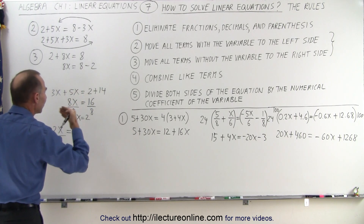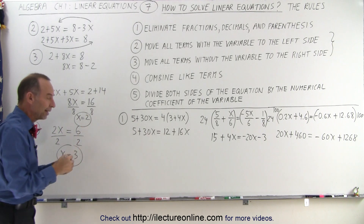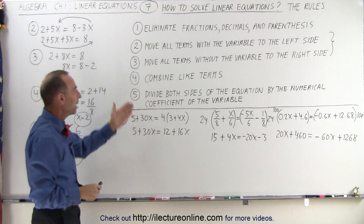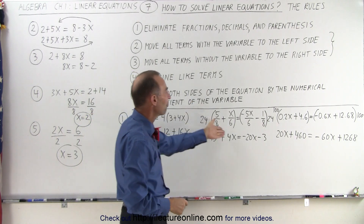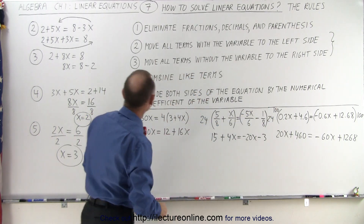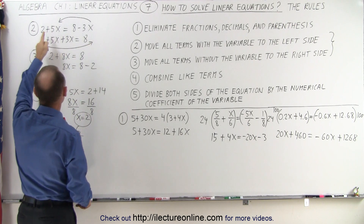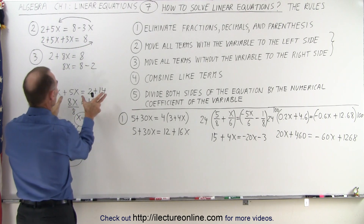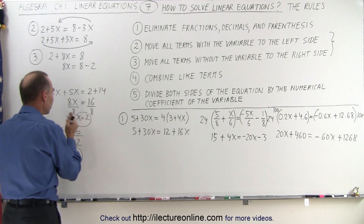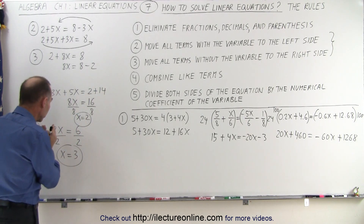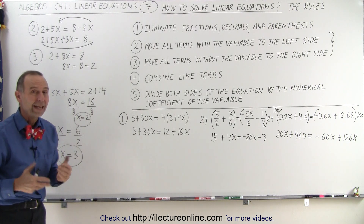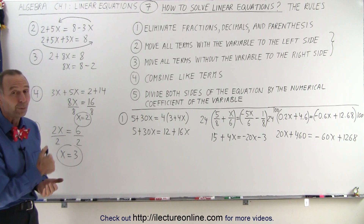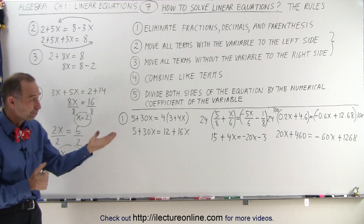So those are the steps to solve linear equations in algebra: first eliminate parentheses, fractions, and decimals; then move all terms with the variable to the left side; move all terms without the variable to the right side; combine like terms; and finally divide both sides by the number in front of the variable. That is how we solve linear equations in algebra. Now we're ready to do some good examples.